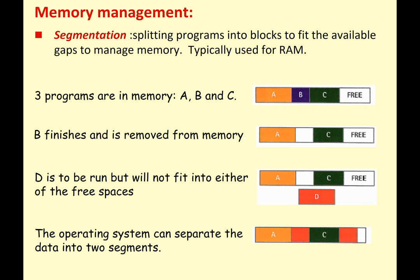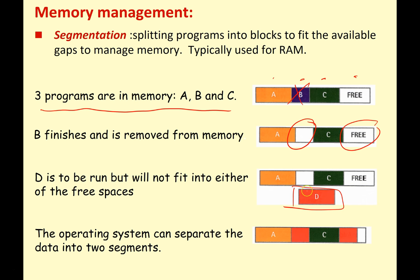Segmentation is simply splitting programs into blocks to fit the available gaps in memory — this is what your operating system uses in RAM. For example, we've got three programs in memory: A, B, and C, with some free memory space. The user closes down application B, and that's removed from memory, leaving two sections of free memory space. We want to run application D, but there's not enough space in either gap alone. However, the operating system splits D between the two gaps, and together there's enough space to run it. Application D doesn't know it's been split between two blocks in RAM — the operating system manages all this seamlessly in the background.